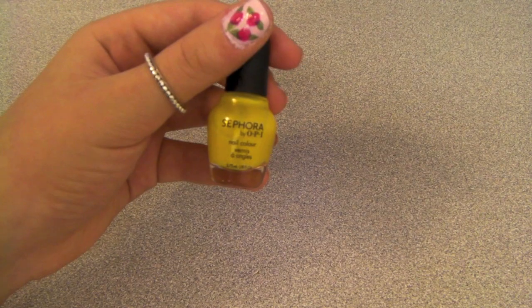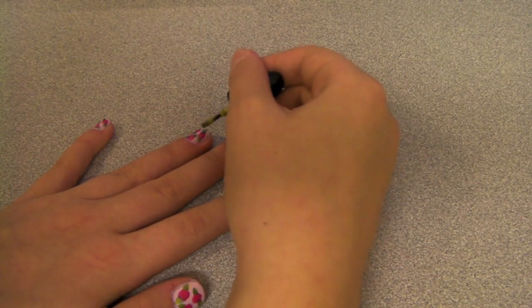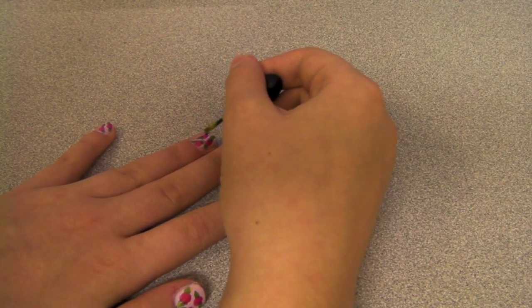Next, I'm taking this yellow color and sweeping it over the green petals to add a bit of contrast. This is an optional step, but I like the way it looks.